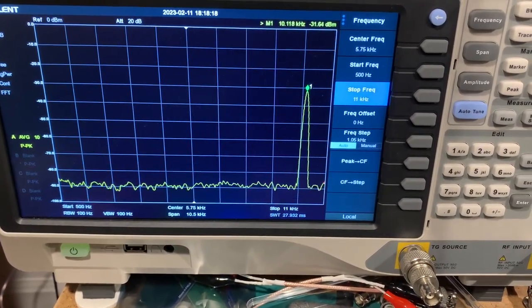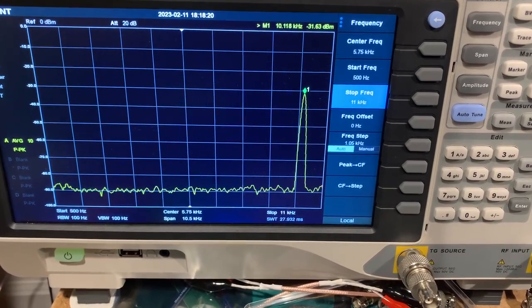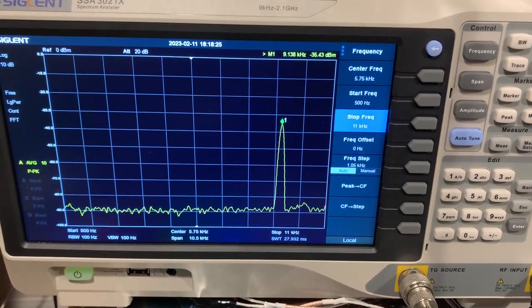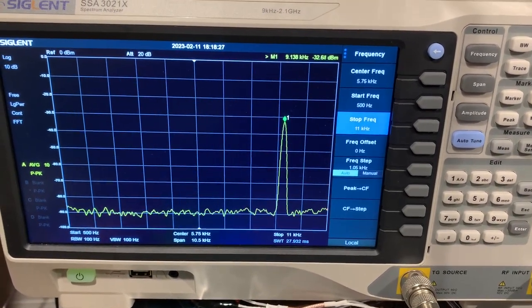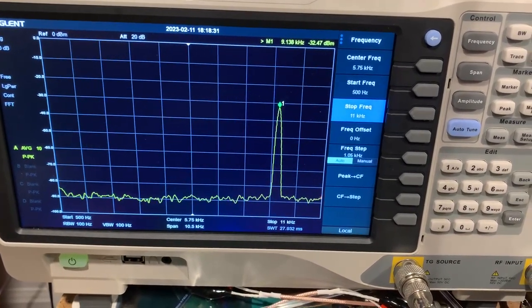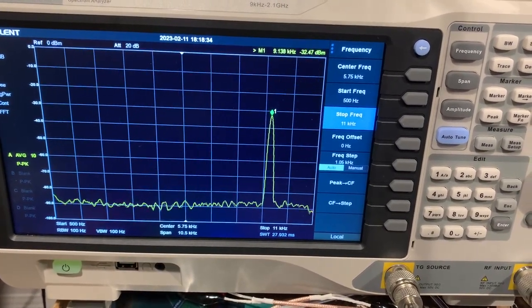And the level is minus thirty-one point six dBm. So I'll just switch it down to nine. So this is the rated lowest frequency response of the spectrum analyzer, and it's at minus thirty-two point four seven dBm, so it's dropped a little bit.